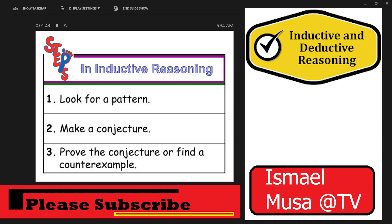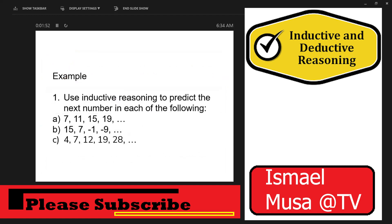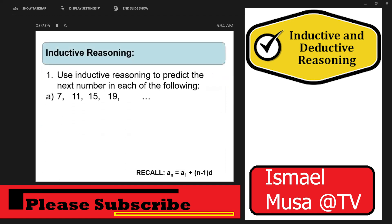Let's use inductive reasoning to predict the next number in each of the following sequences. We have 7, 11, 15, 19. Notice that you add 4 to get each next number: 7 plus 4 is 11, plus 4 is 15, plus 4 is 19. So the next number is 23. Our conjecture is we always add 4 to the next succeeding number.